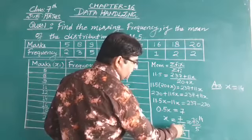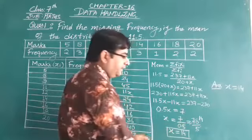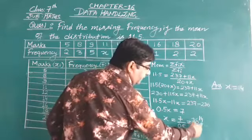So 7 upon 0.5. To remove this decimal point, we will put here zero. That is, we multiplied and divided by 10. So we get 70 by 5. Now, 70 divided by 5, we get 14.